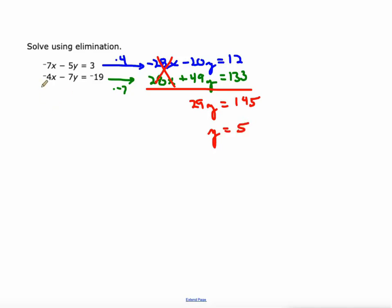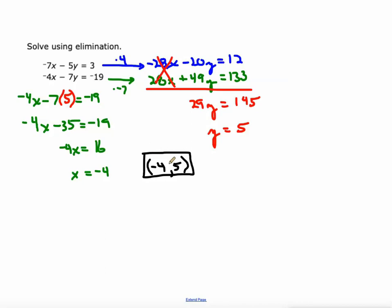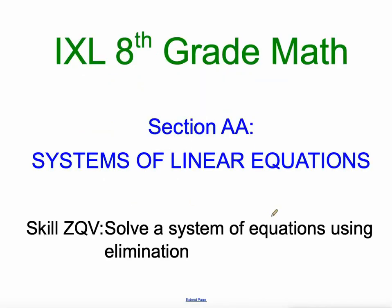Now we just have to figure out what x is. I'll take this bottom equation and plug 5 into it for y: negative 4x minus 7 times 5 equals negative 19. Negative 7 times 5 is negative 35. Then I'll add 35 to both sides so negative 19 plus 35 is 16. Lastly just divide both sides by negative 4, and 16 divided by negative 4 is negative 4. So our solution is negative 4 positive 5. In the first skill of this section we learned how to check that answers are solutions to a system, so you can use that skill to go back and check your answer before you hit submit. Solving a system of equations using elimination, skill ZQV in section double A of IXL's 8th grade math.